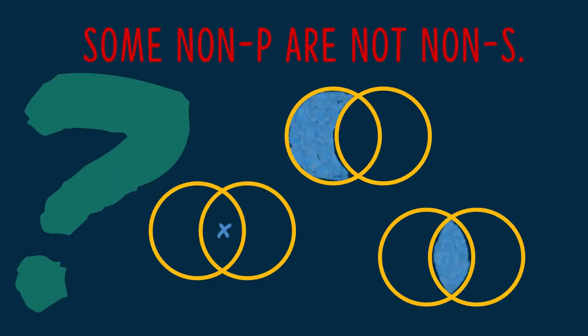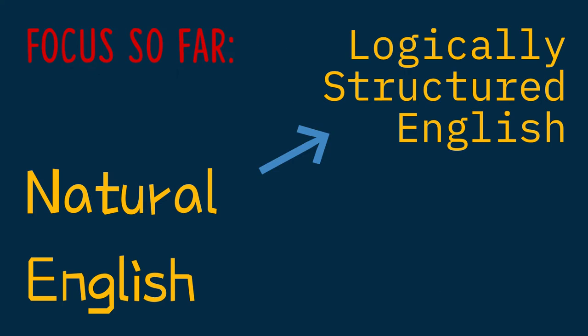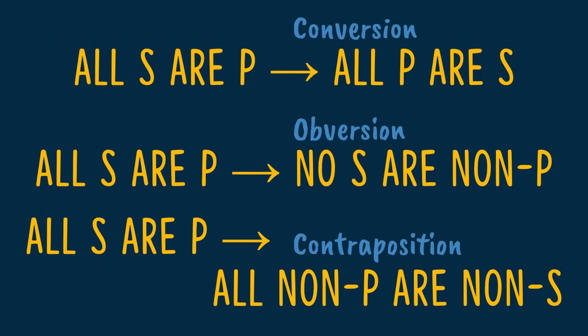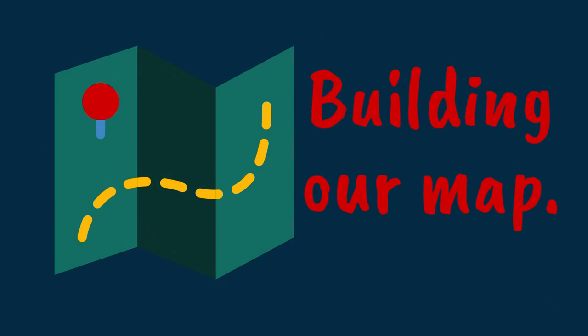Sometimes when we go to diagram categorical statements, it can be a little hard to figure out on our own, without looking at some sort of key, how to go about mapping what is reflected in the statement onto an empty Venn diagram. So far in this class, we've placed a premium on being able to restructure natural English into what we've called logically structured categorical statements. We want to give a roadmap for conceptualizing various forms of categorical statements, particularly when we transform them through obversion, conversion, or contraposition.